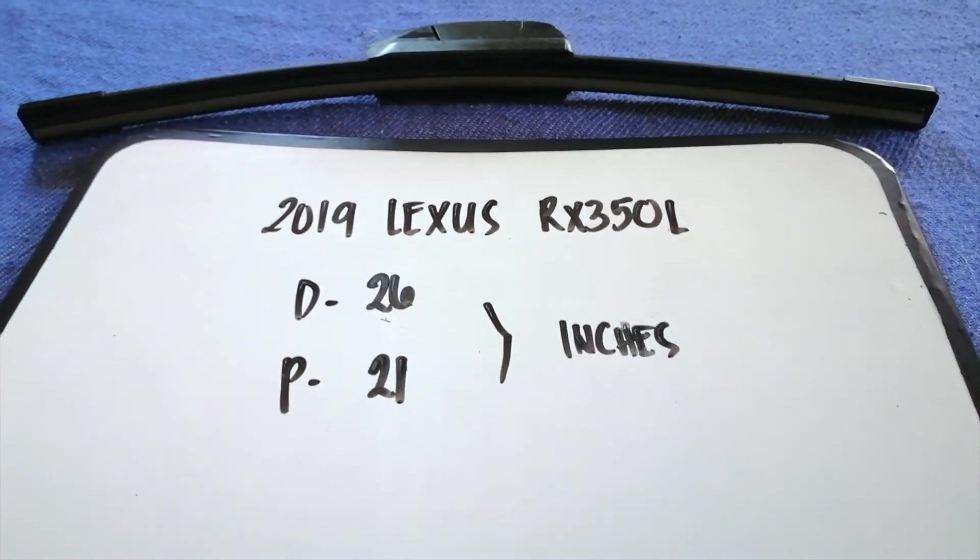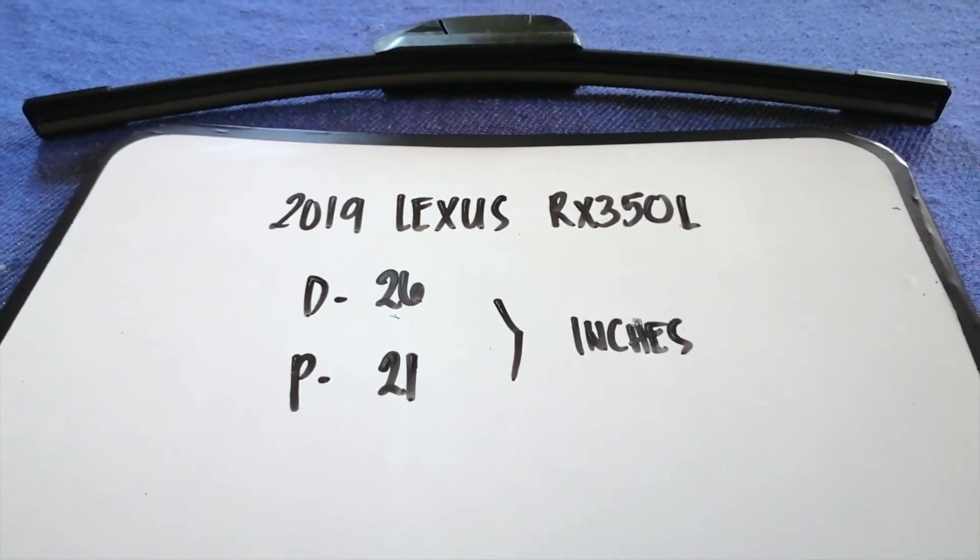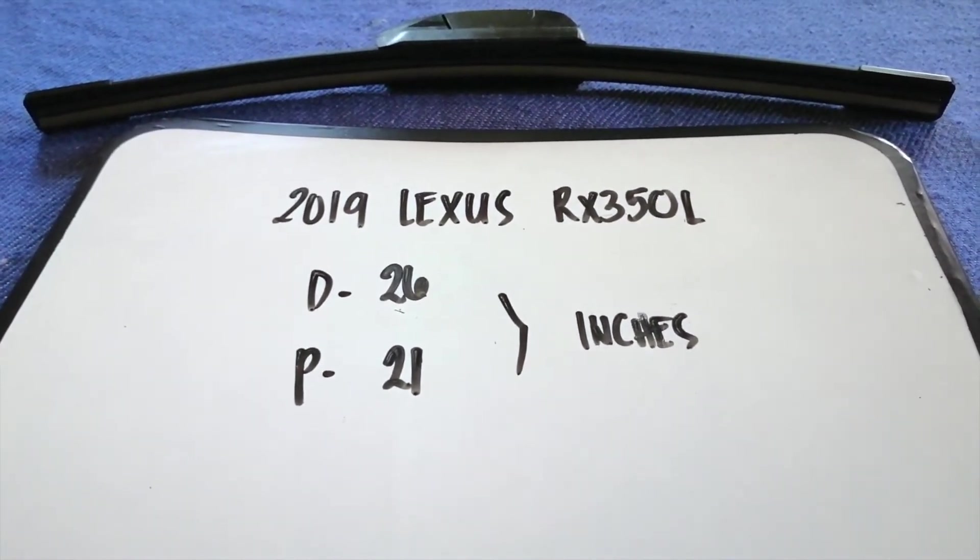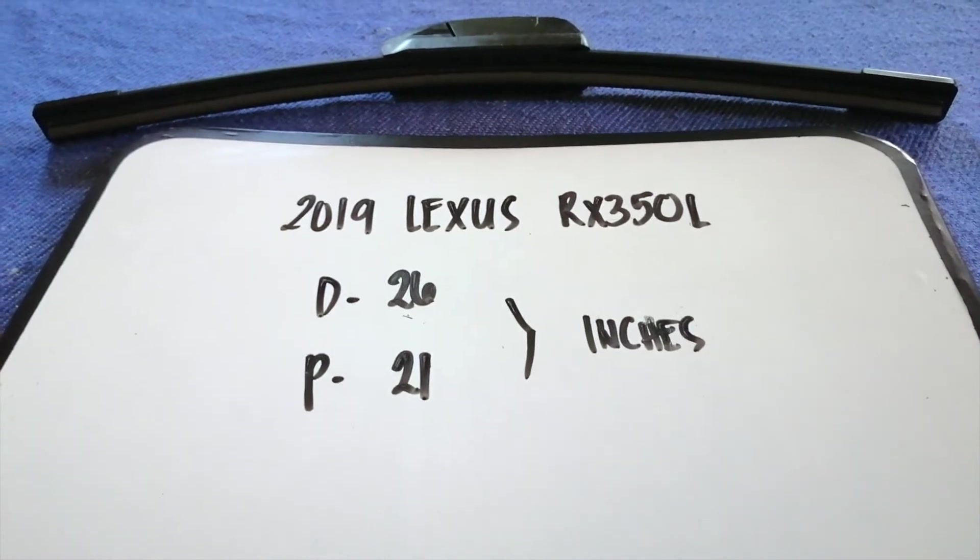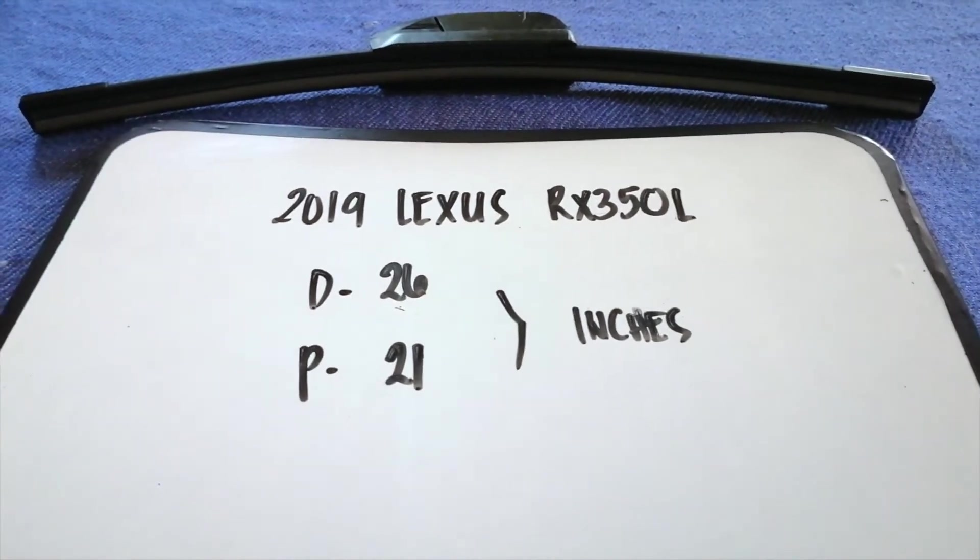As you can see, the blade size is different for the driver and passenger. So once again, the wiper blade replacement size for the 2019 Lexus RX 350L is 26 inches for the driver's side and 21 inches for the passenger side.